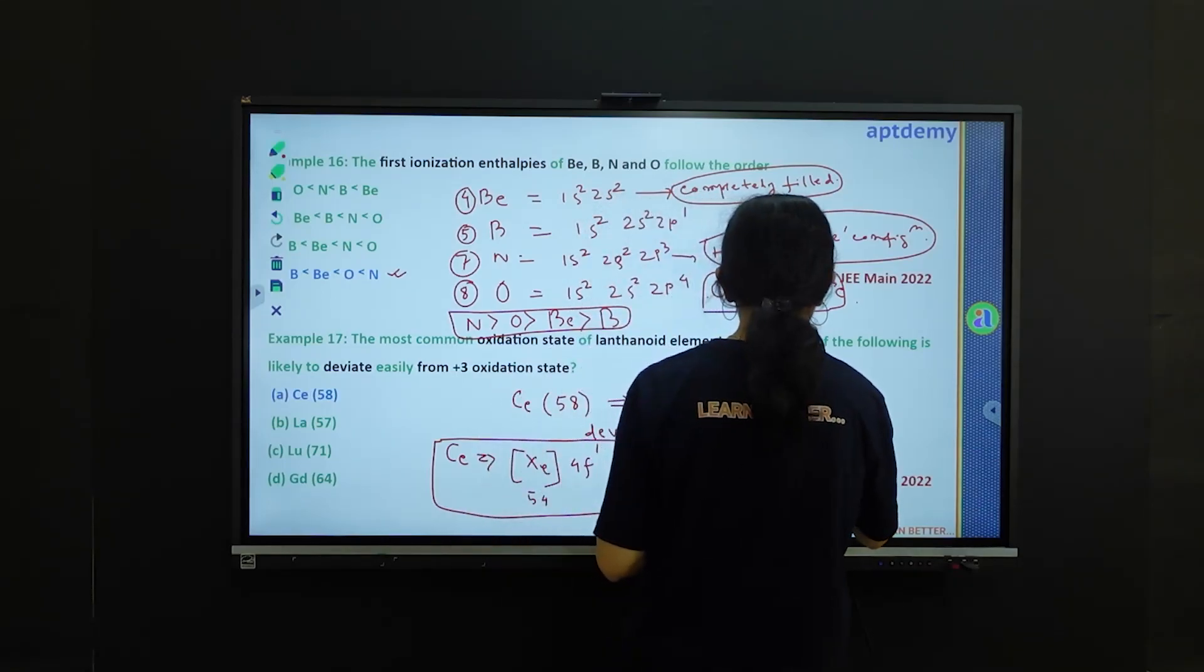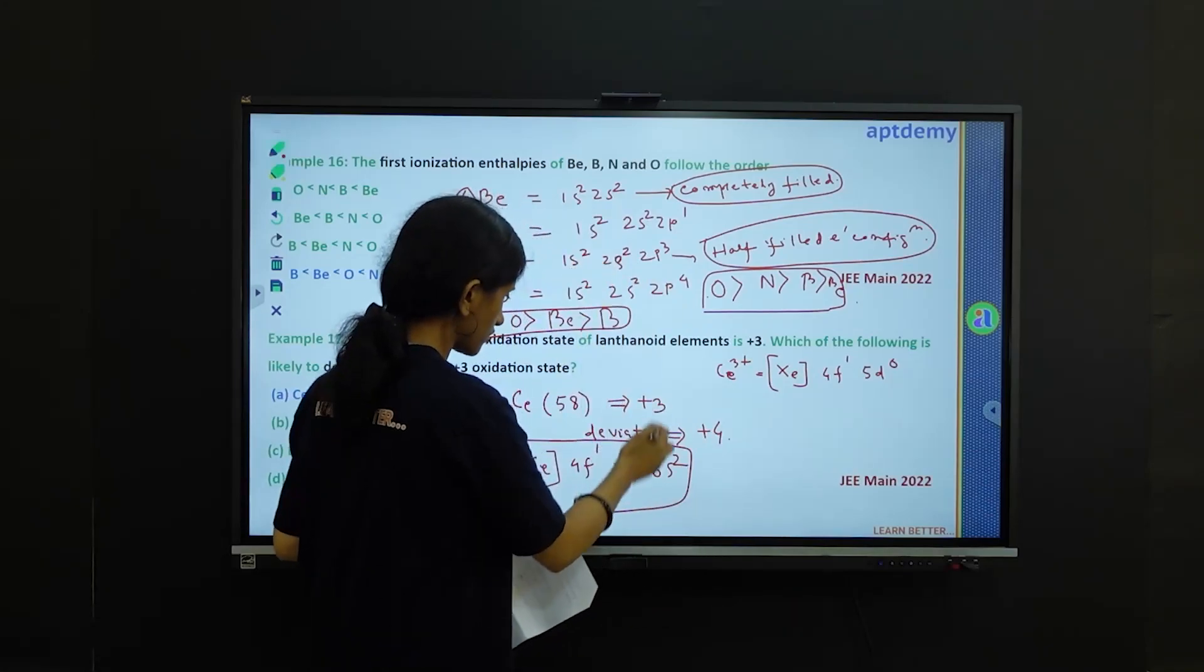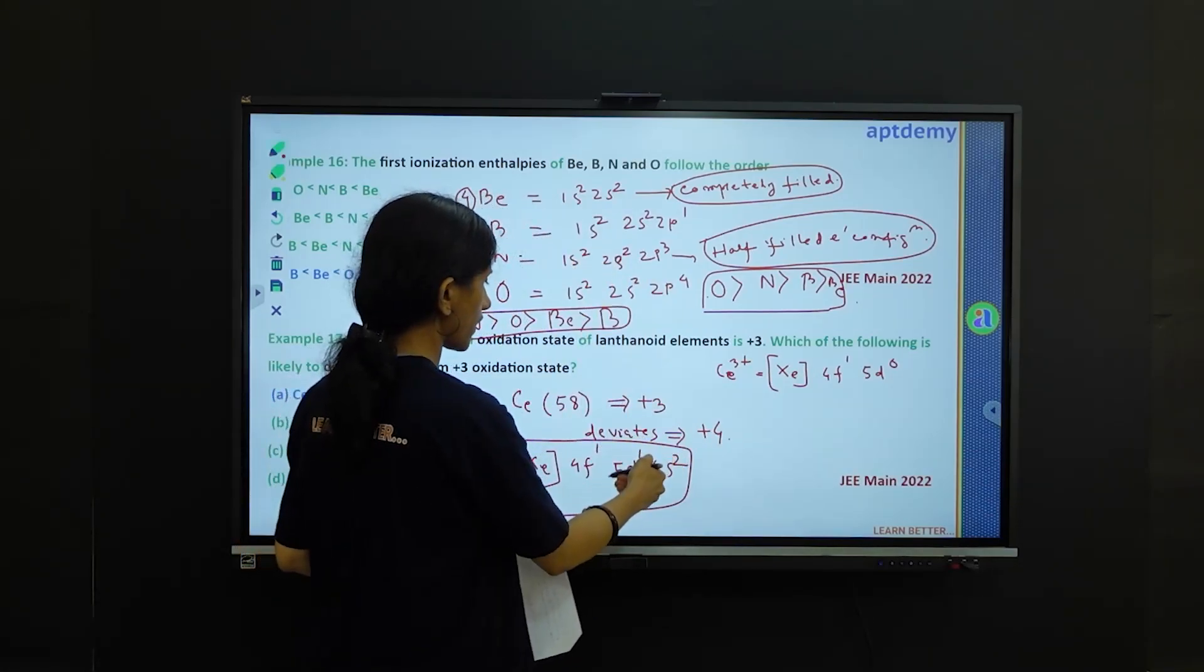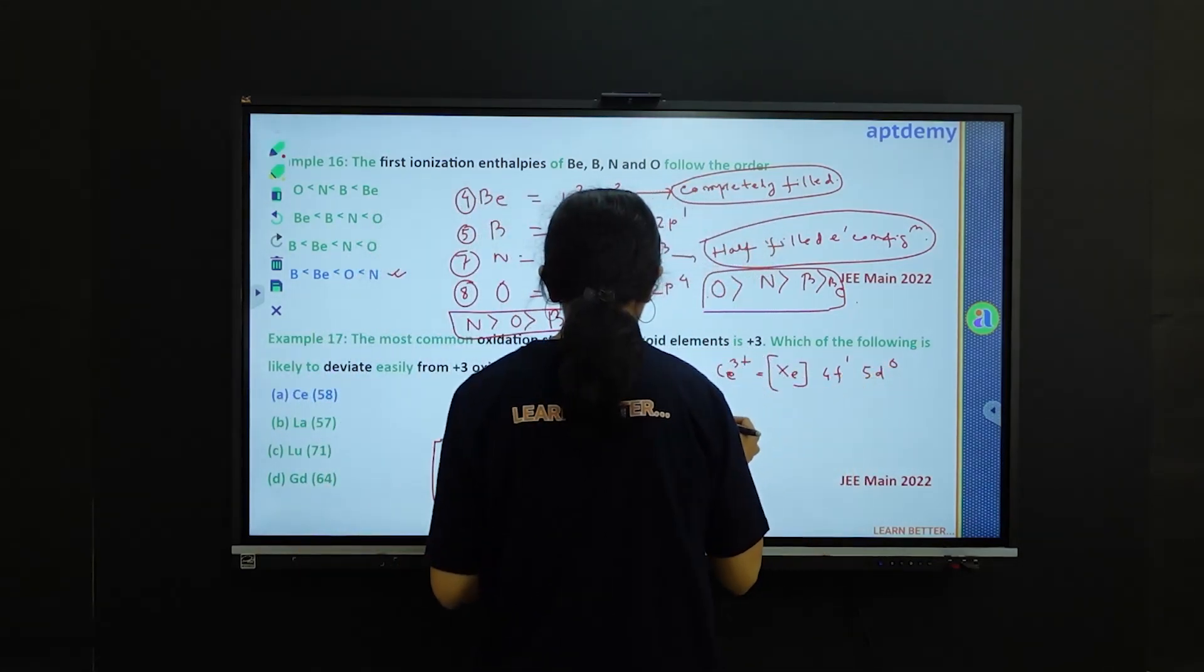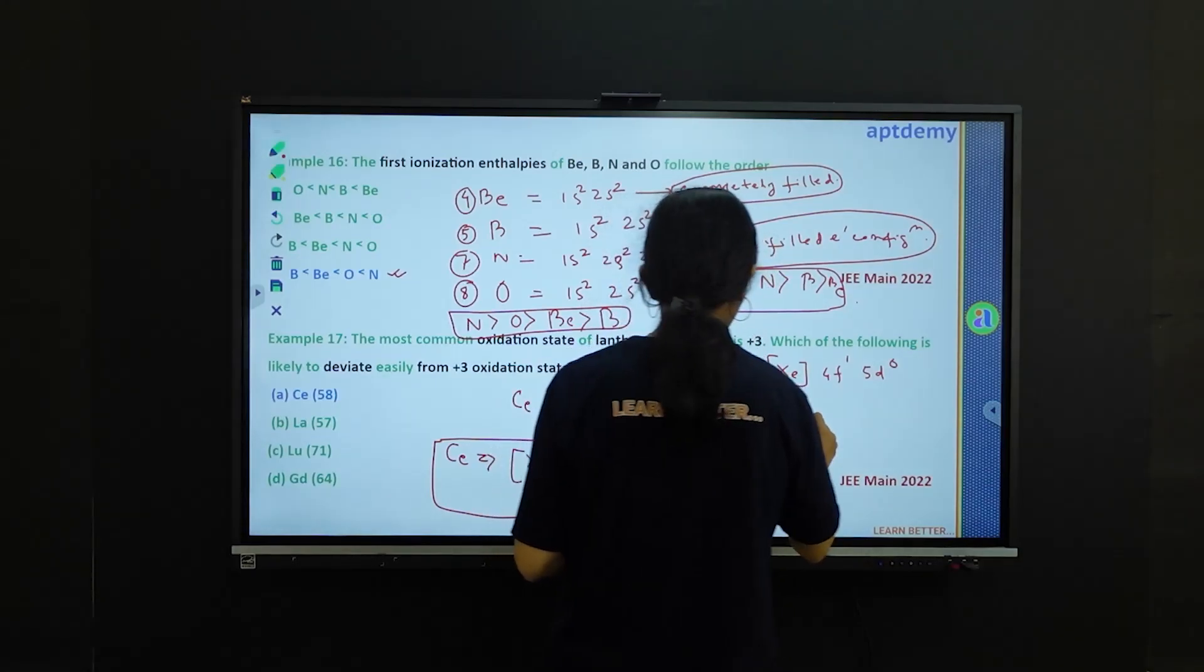Now if you go for Ce3 plus, what will happen to the electronic configuration? Xenon 4f1 5d0. Two electrons from 6s orbital and one electron from 5d orbital will be removed to give it 4f1 5d0 outer configuration.